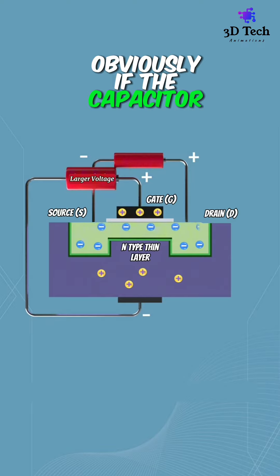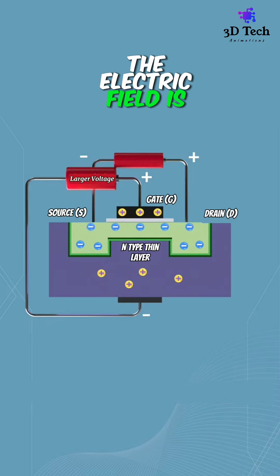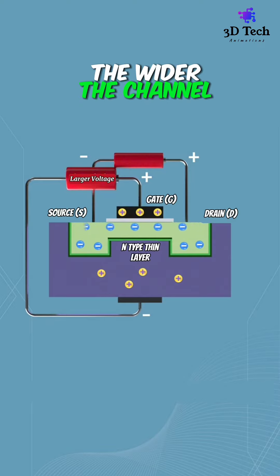Obviously, if the capacitor voltage UGS is larger, the electric field is stronger, the channel is wider, and the drain current is greater.